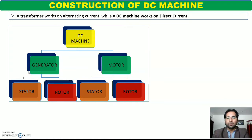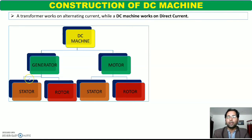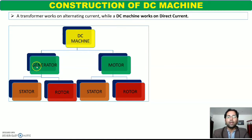अगर उनके parts की बात करें, तो अगर electrical machine है, यानि energy conversion होगा — electrical energy mechanical energy में convert होगी — means दो important parts होने चाहिए. पहला important part होगा stationary part, that is called stator, और second important part होगा rotating part, that is called rotor. यानि चाहे वो generator हो या motor हो, उसके दो important parts होंगे — stator as well as rotor.